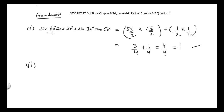I have made another video which teaches how we can memorize values of all six trigonometric ratios for 0°, 30°, 45°, 60°, and 90°. You can check that video if you don't exactly remember the values of sin 60°, cos 30°, etc.